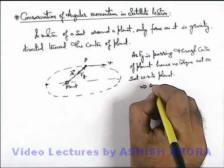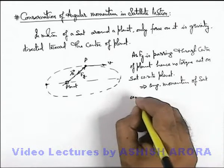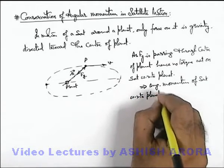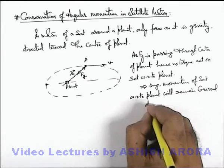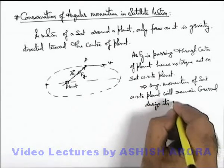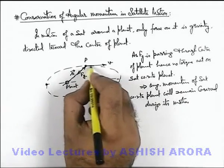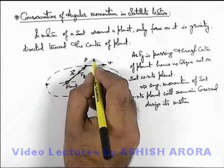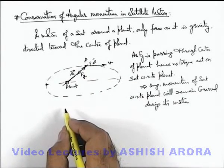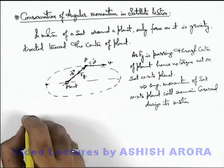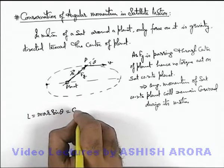This implies the angular momentum of the satellite with respect to the planet will remain conserved during its motion. At position P, the satellite has speed v and position vector r, and the angle between the position vector and the velocity vector is θ. Its angular momentum at position P is mvr sinθ, and that remains conserved always.